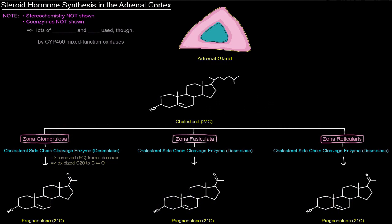In this video I want to talk about steroid hormone synthesis in the adrenal cortex. As I go through this, I show all the different structures and enzyme names and some details, but I don't show the stereochemistry because it gets really complicated and it's not super important for understanding what's going on. I also don't show the coenzymes in each of the reactions, but it's worth noting that lots of NADPH and molecular oxygen are used because the enzymes are cytochrome P450 mixed function oxidases, and mixed function oxidases use molecular oxygen as well as NADPH. We're talking about reductive biosynthesis here, so it makes sense that we're using NADPH.